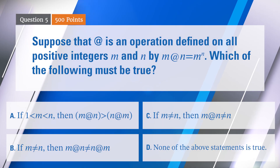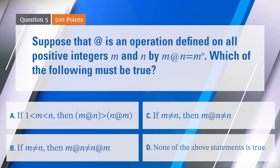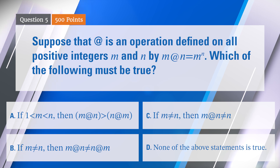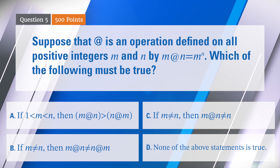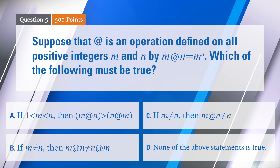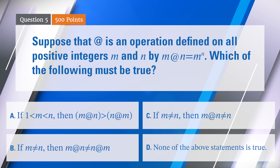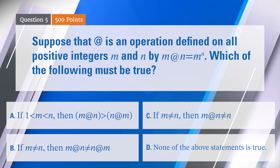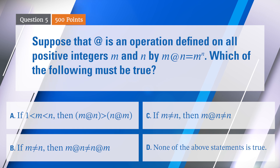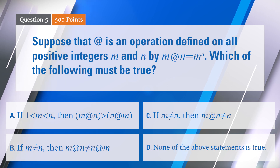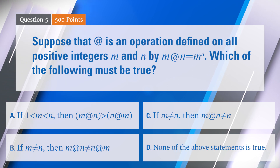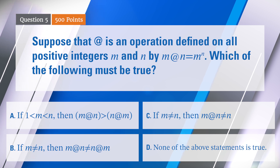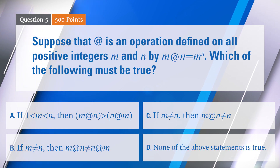Suppose that '@' is an operation defined on all positive integers m and n by: m @ n equals m to the nth power. Which of the following must be true? Option A: if m is between 1 and n, then m @ n is bigger than n @ m.